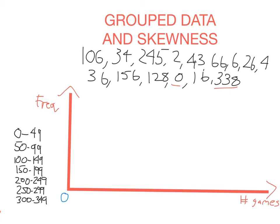So now I'm just going to draw up a frequency table — write how many scores were in each class. From 0 to 49 there are 9 scores in total. From 50 to 99 there is 1 score. From 100 to 149 there are 2 scores. From 150 to 199 there's 1, then 1, then 0, and then 1. So 15 scores in total.